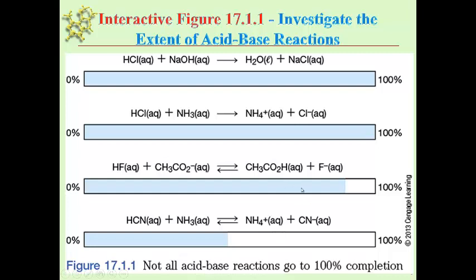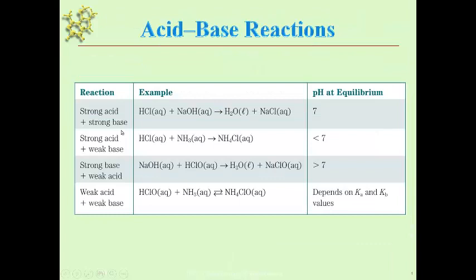For the last two examples in our acid-base reactions, we have acids and bases where we consider what's stronger on either side of the equation. For the first two reactions, the first one is a neutralization reaction, and the second one does not reach neutrality but it can reach completion. In acid and base reactions, you have to consider: what are the reactants — are they strong or weak — and then what are the products? This table is very useful as a summary to describe the pH once equilibrium is achieved.